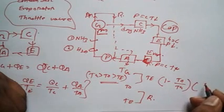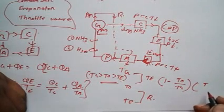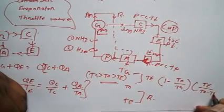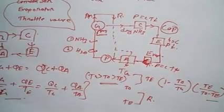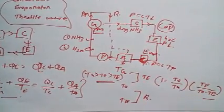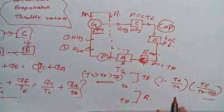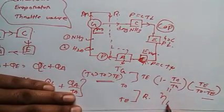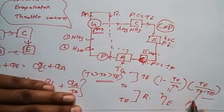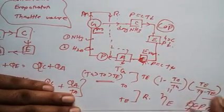What is the formula for COP for a refrigerator? Desired effect - TE upon T naught minus TE in terms of temperature. Desired effect upon work input in terms of heat. This is efficiency of engine, this is COP of refrigerator.